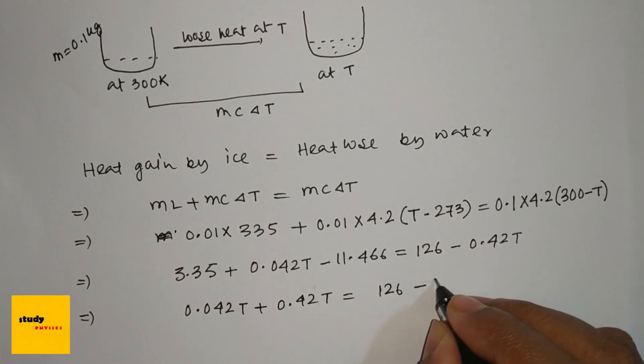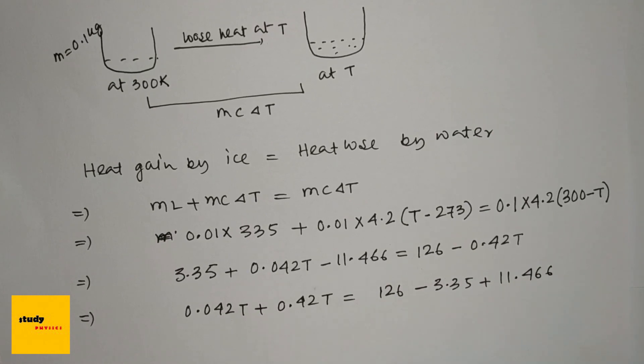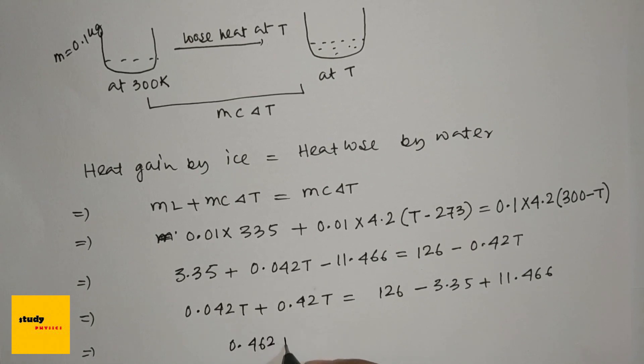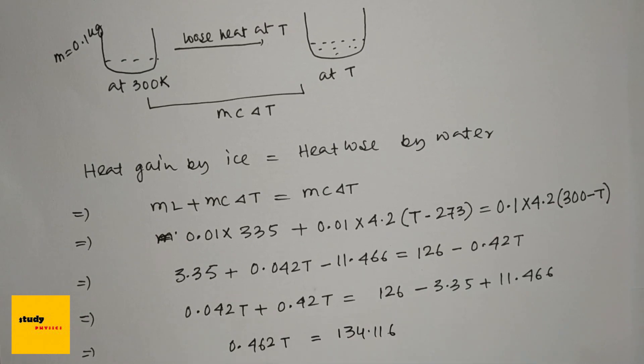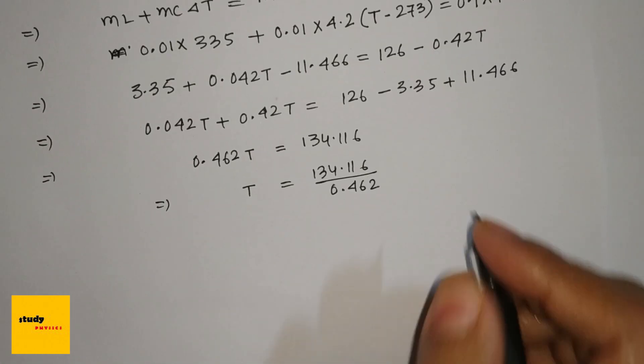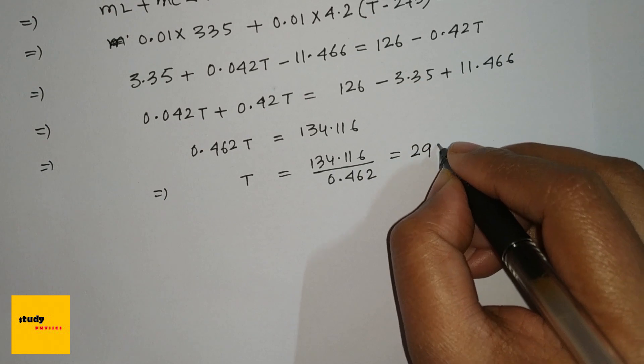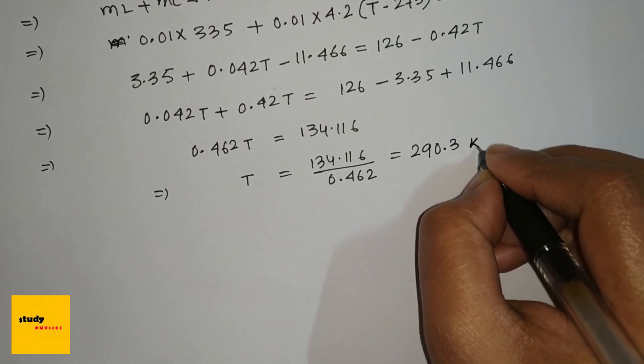And this is 0.462T equals 134.116. So T is 134.116 divided by 0.462, so the temperature is 290.3 Kelvin.